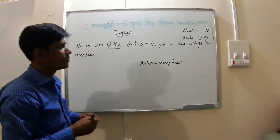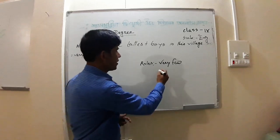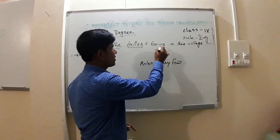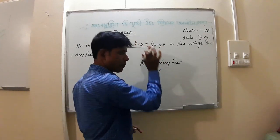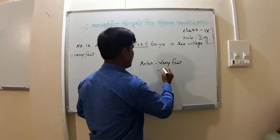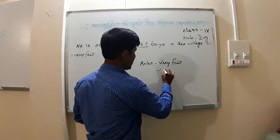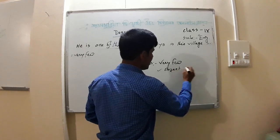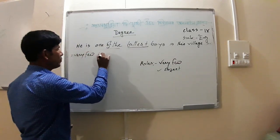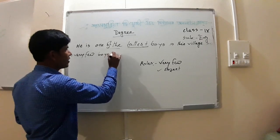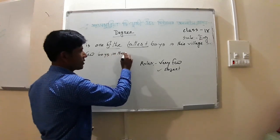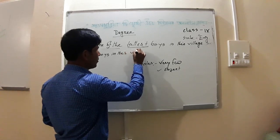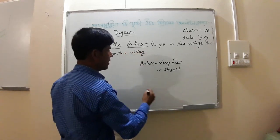For the superlative degree converted to positive, the object will be 'the other boys' — b-o-y-s — in the village. So the structure includes 'like the other boys in the village' — v-i-l-l-a-g-e.